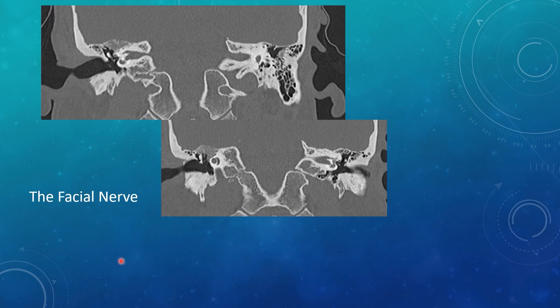For the facial nerve, you'd like to see bony covering of the facial nerve canal throughout its course. Here is a facial hemangioma — a spiculated low density lesion at the site of the geniculate ganglion, just above the cochlea, jutting into the middle cranial fossa. This is a classic appearance and location of a facial hemangioma.